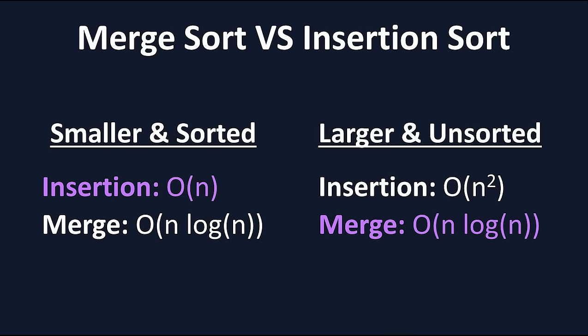For larger, less sorted lists, insertion sort has a runtime closer to O of N squared, whereas merge sort remains at O of N log N, so that's where we might want to use merge sort. I'm hoping this is all making sense so far and you're understanding how the algorithms work and when we might want to use one over the other. Now, time to look at our last sorting algorithm.